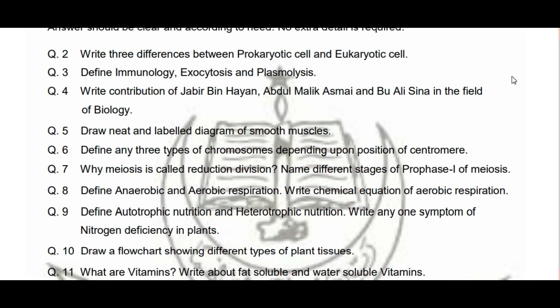Centromere ki position ko dekhte huwe chromosomes ke types mein se any three batani hain. Diagram bhi bana dein toh bohat achha hoga. Then: 'Why is meiosis called reduction division? Name different stages of prophase one of meiosis.' Meiosis ko reduction division kyun kaha jata hai explain karna hai, aur sirf names batane hain stages ke prophase one of meiosis ki. Iske baad chemical equation of aerobic respiration likhni hai.